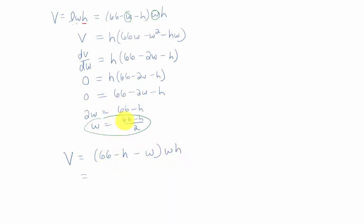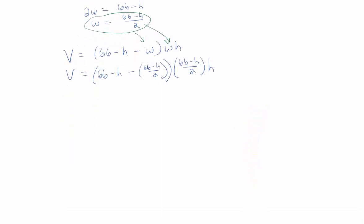Now I'm going to plug this w into this volume equation, and we get the following mess. Our lives can be simplified a little bit if we understand what's going on right in here. We have 66 minus h, and then we're subtracting that same thing, 66 minus h, but divided by 2.